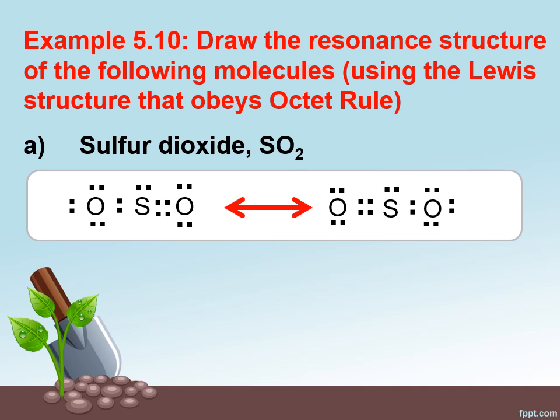Let's write and draw for example 5.10. Draw the resonance structure of the following molecule using the Lewis structure that obeys octet rule. Sulfur has 6 valence electrons as a free atom. So it is going to form double bond with oxygen on the right and on the left. So the resonance structure for sulfur dioxide is given in the slide. They can exchange, the electrons can move around sulfur and in between the two resonance structures we put the sign arrow with two heads left and right.